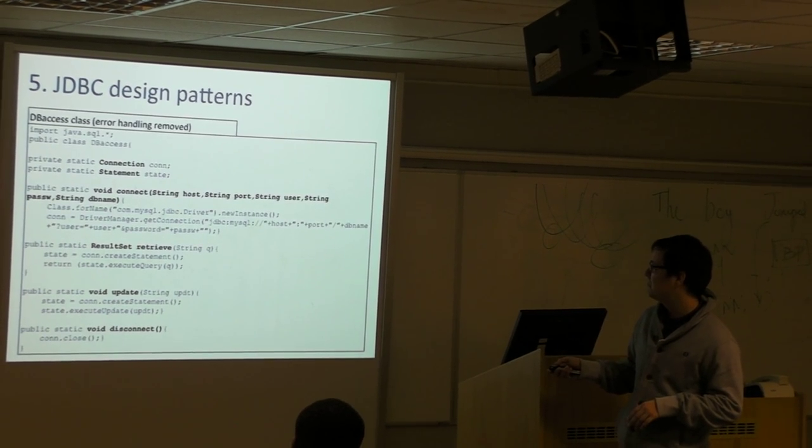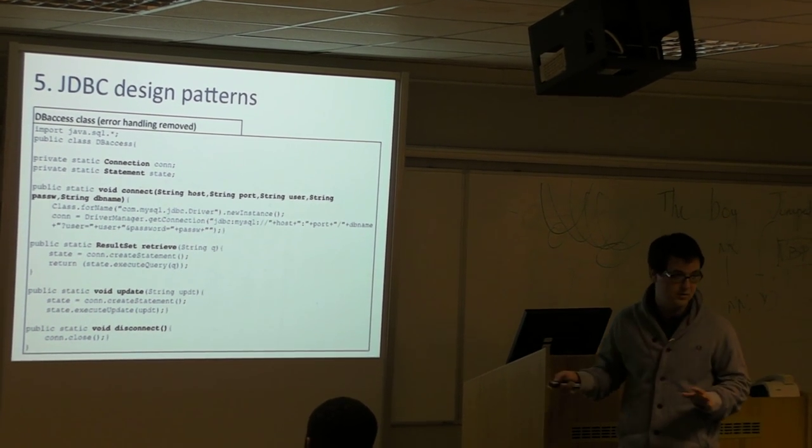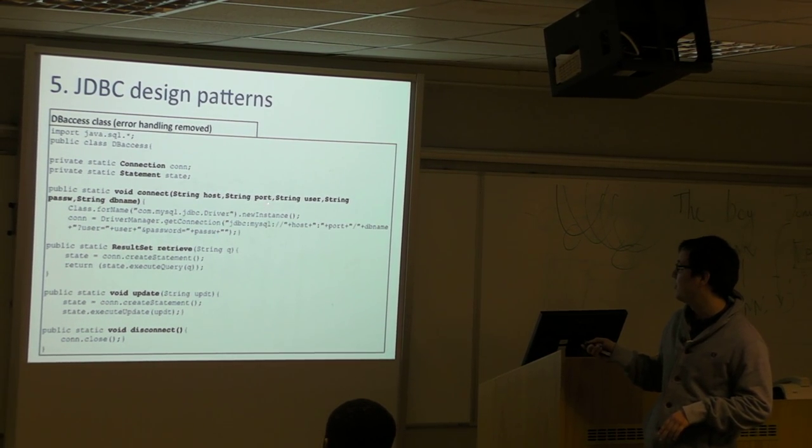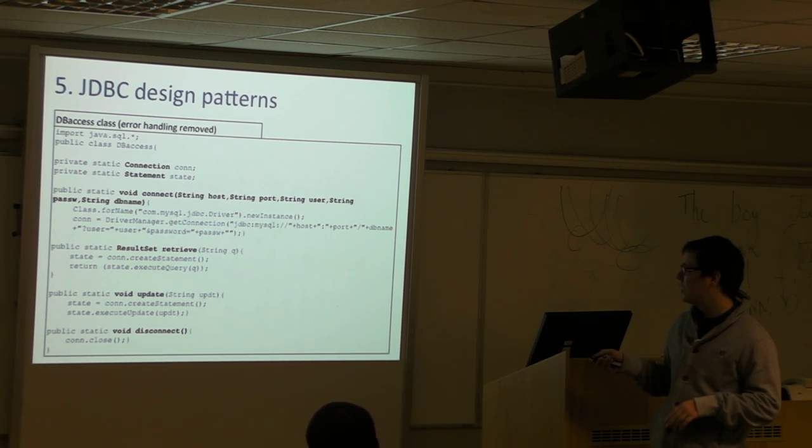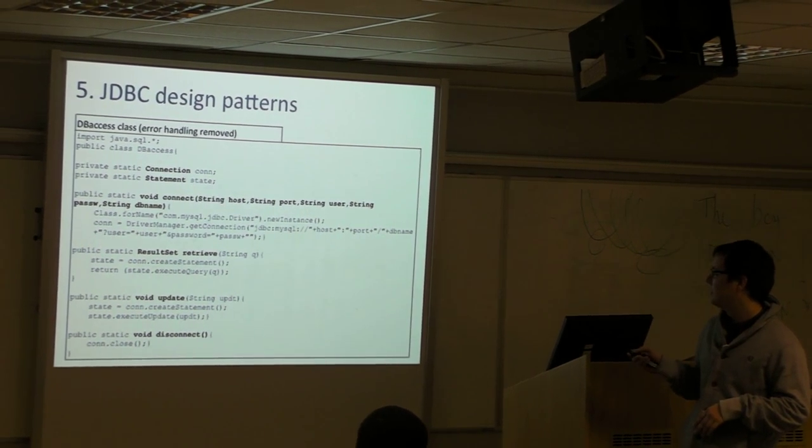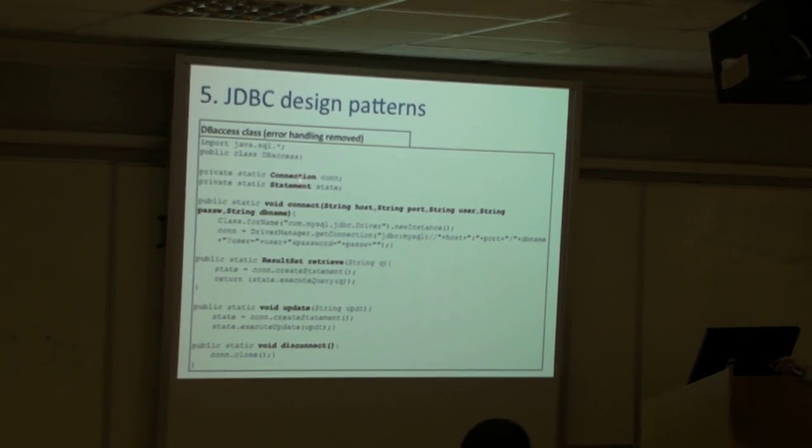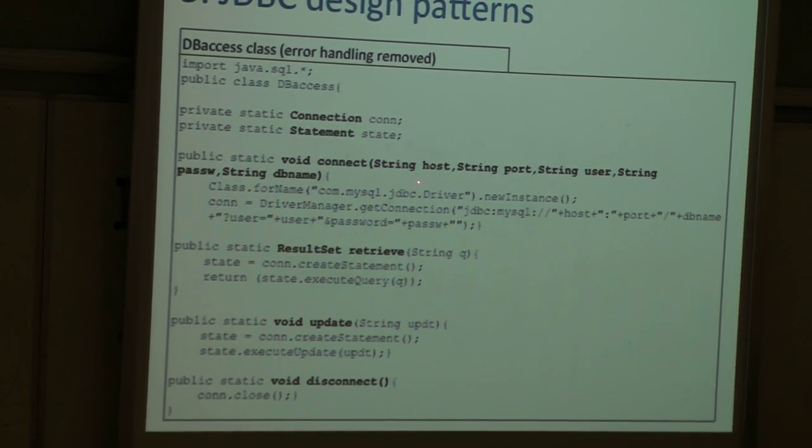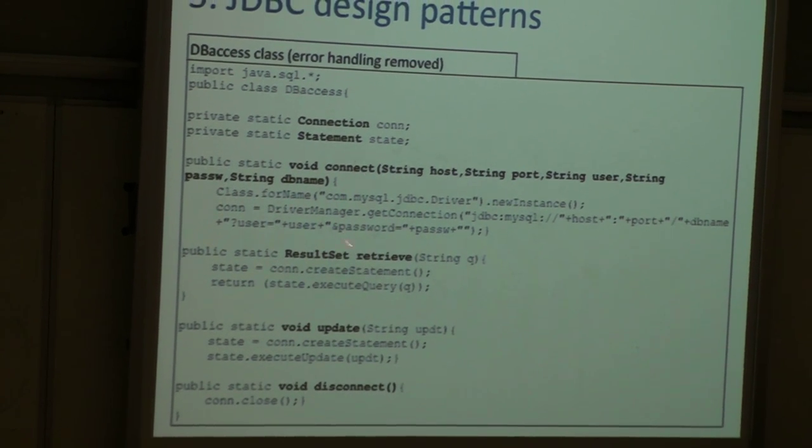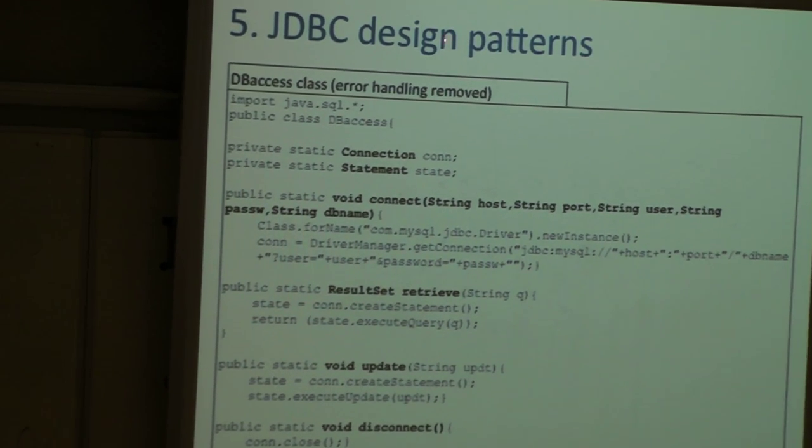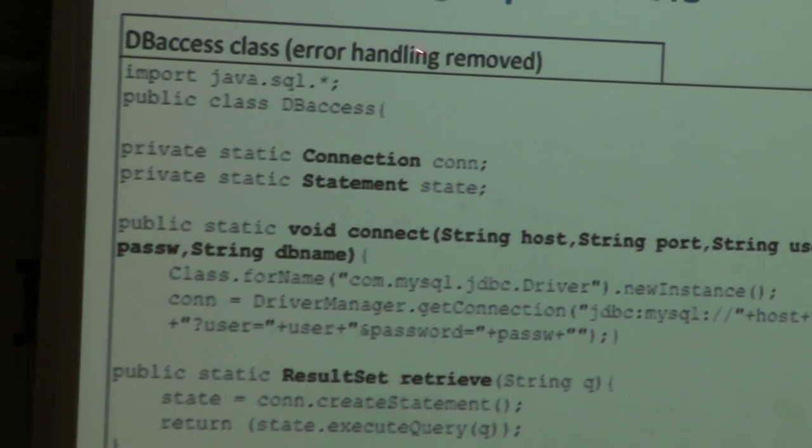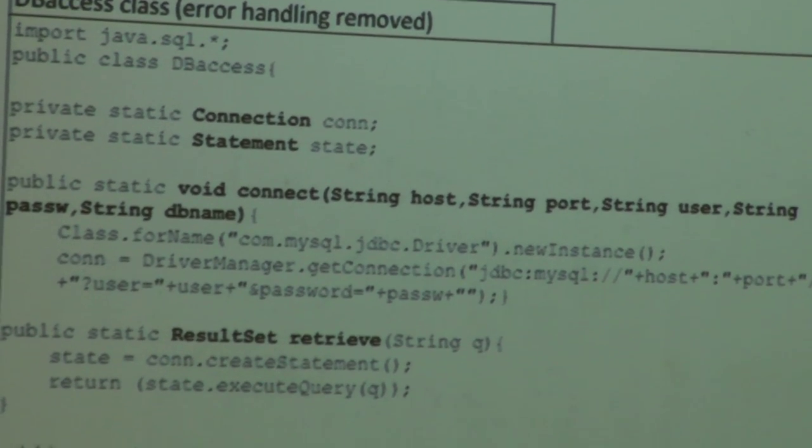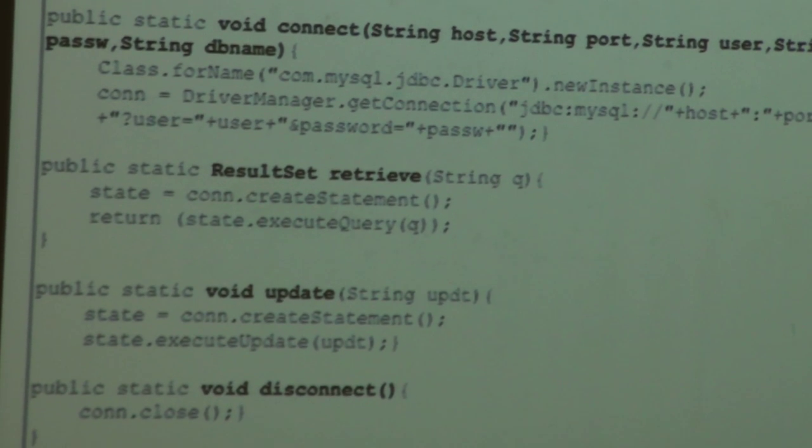How does it look? Just the methods I've shown you so far, but these are independent of the host, port, user, and database name. If there's a class calling this method, this class should make use of these methods using its specific requirements for the host, port, user, the query to update the database, and the query to retrieve. This is a very simple class that allows you to access from any application to a database through JDBC.